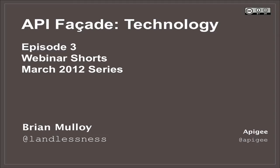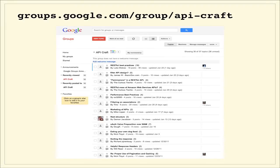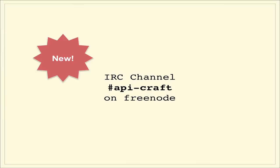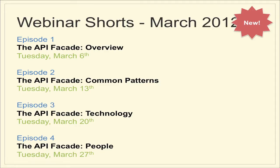Hello! Welcome to episode 3 of our webinar series on the API facade pattern. Let's get started. We have a Google group called API Craft — a great spot to talk about API stuff from business to technology. We have all these videos available on YouTube at youtube.com/Apigee. We also have an IRC channel on Freenode called API-craft. So we are in episode 3. The last two episodes covered an overview and the common patterns in the API facade pattern.